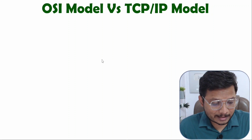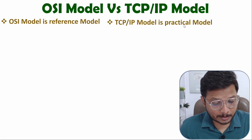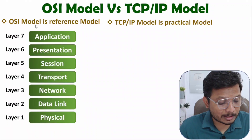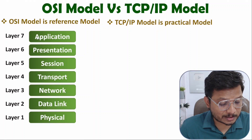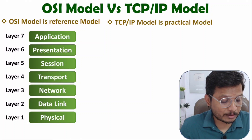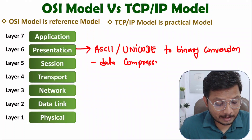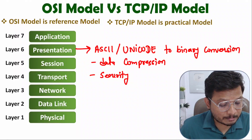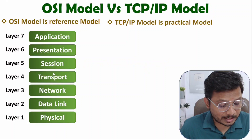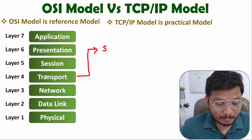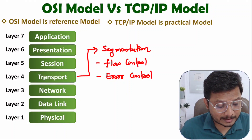OSI model is a reference model and TCP/IP model is a practical model implemented in 2023. In OSI model there are seven layers. At the application side, the user works with the application layer first, then presentation layer where we convert characters into binary, perform data compression and security. Then session layer handles session establishment, management, and termination. After that, transport layer provides segmentation of data, converting data into segments.